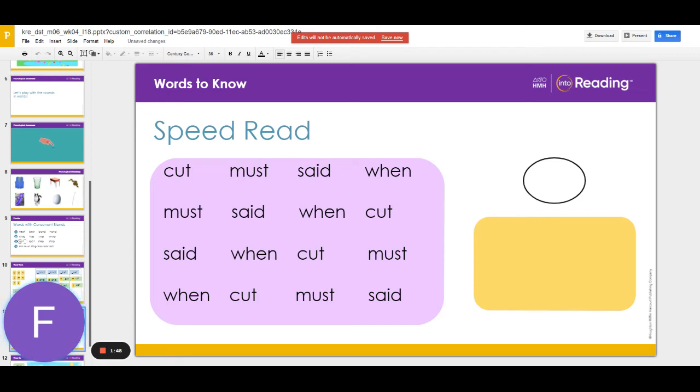Now I will place the oval over a word and you will say the word. Ready? What word? Must. What word? Said.